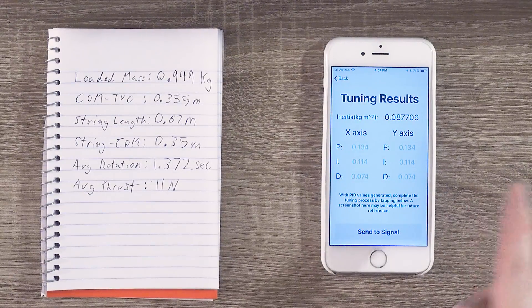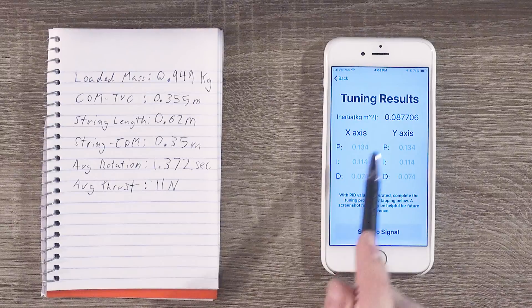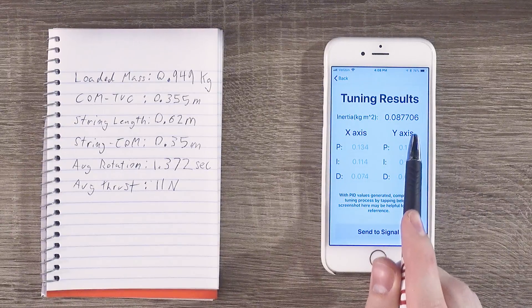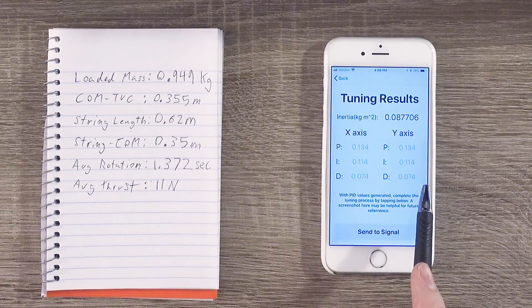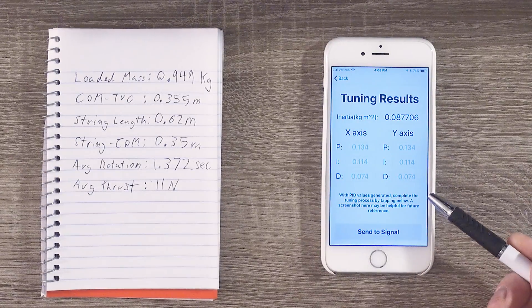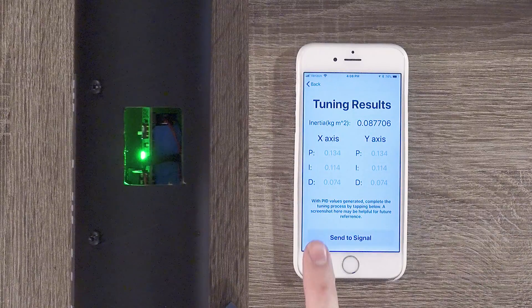At the top of the page, you'll find the vehicle's inertia, but right below that, you'll find the P, I, and D values that I mentioned earlier. Right now, these are the suggested sensitivities based on the information you entered. To configure these into your flight computer, hit Send to Signal.